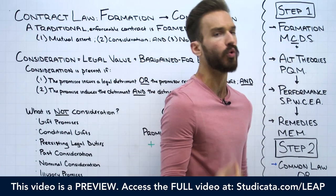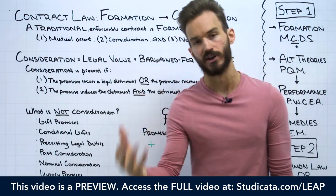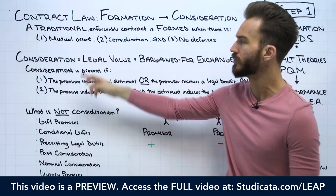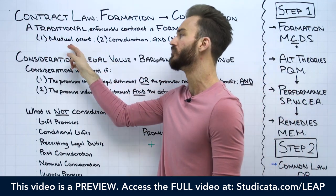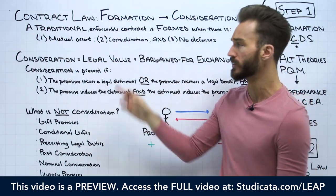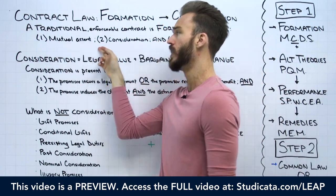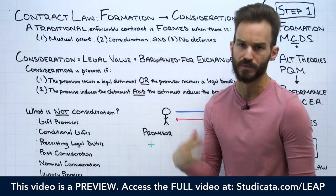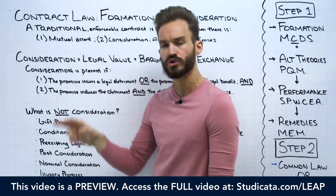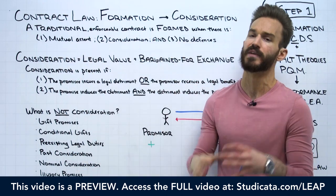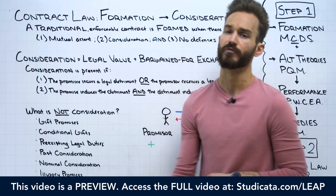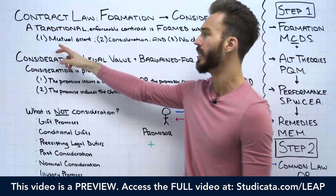This C stands for consideration. So at this point, just to review: we've talked about how we determine whether there's mutual assent between the parties. This has been the primary focus of our videos up until this point. To have mutual assent between the parties, all we need is a valid offer and a valid acceptance of that offer. Once we have an offer and an acceptance, we know we have mutual assent.